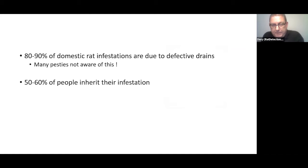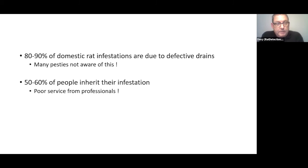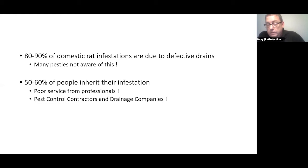These are some figures we see on Twitter, Facebook, and in the press: 80 to 90% of domestic rat infestations are due to defective drains. Many pest controllers and drainage contractors are not aware of this. 50 to 60% of people inherit their infestation - these are people selling houses with a known rat infestation in desperation, due to a poor service from both pest control and drainage contractors.